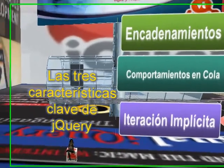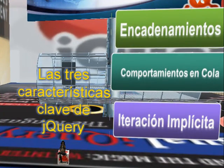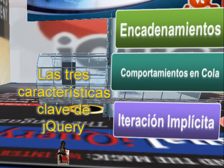Y en tercer lugar, las capacidades de encadenamiento de jQuery, que permiten integrar las clases —así por ejemplo utilizar añadir y remover, addClass y removeClass— en una única línea de código sin tener que hacerlo en dos líneas distintas. Esto nos va a permitir compactar y reducir mucho el código necesario para escribir la funcionalidad que queramos darle a nuestra aplicación. Vamos a verlo ahora de modo rápido, explicando cómo podemos ir compactando nuestro código.